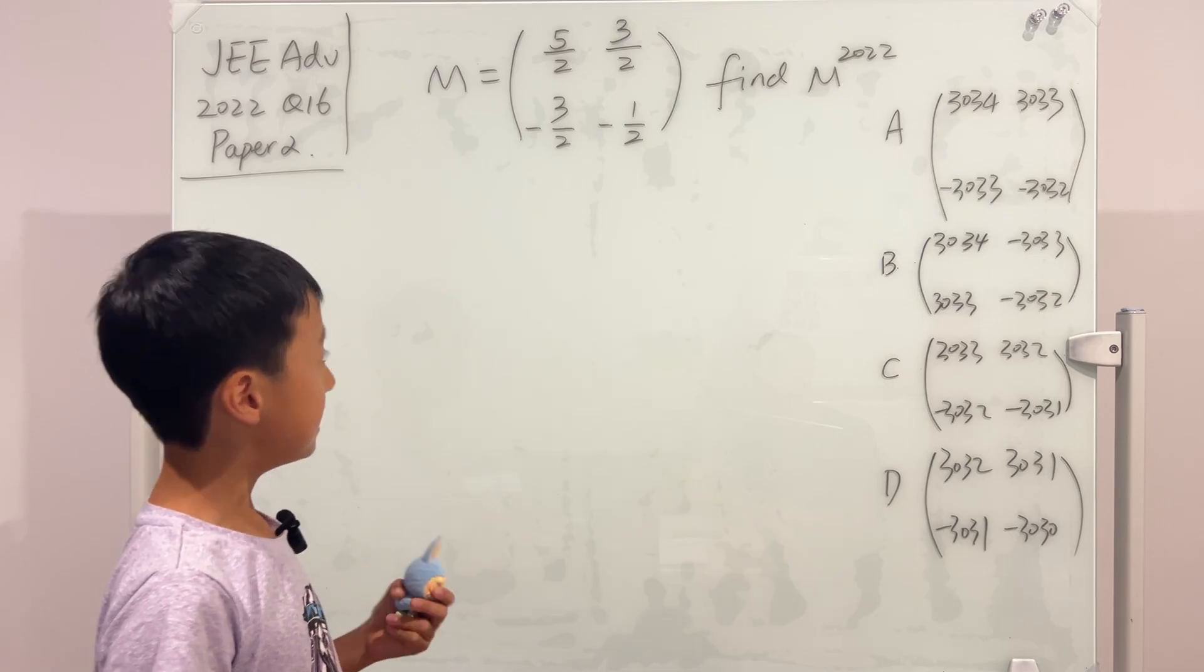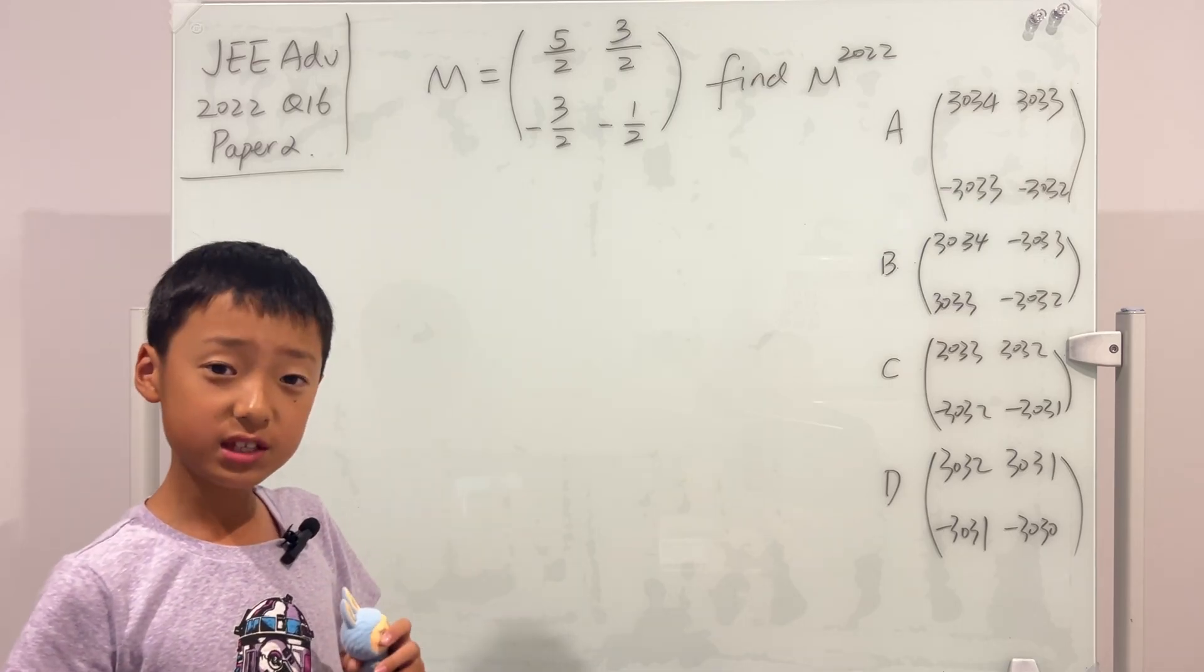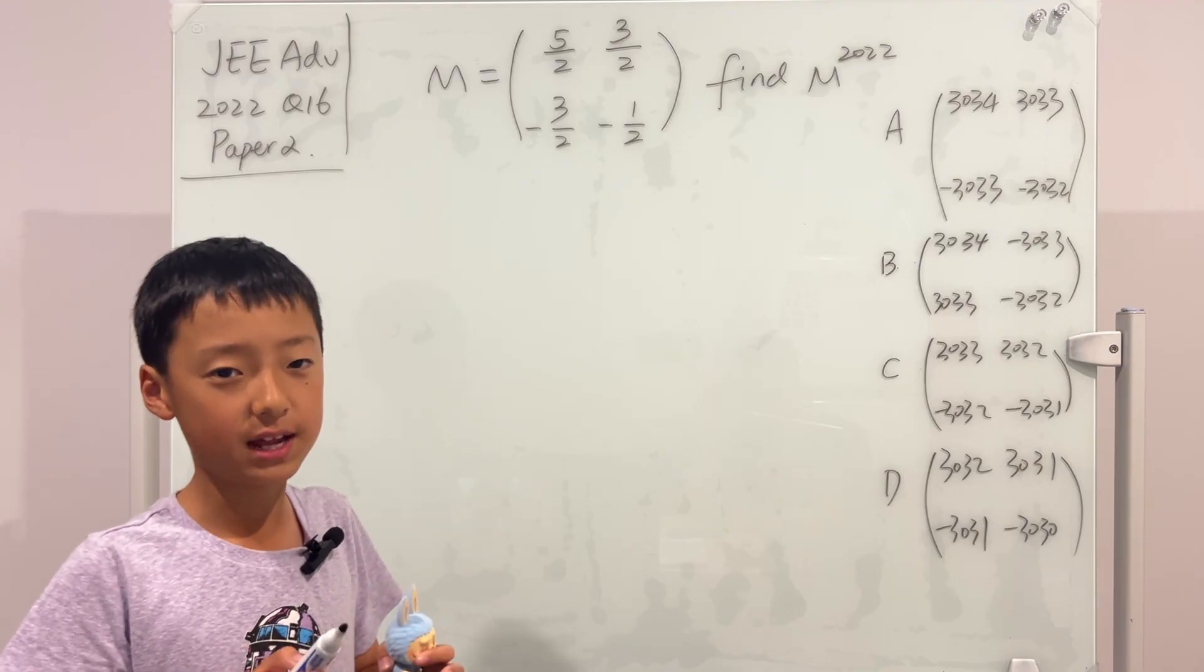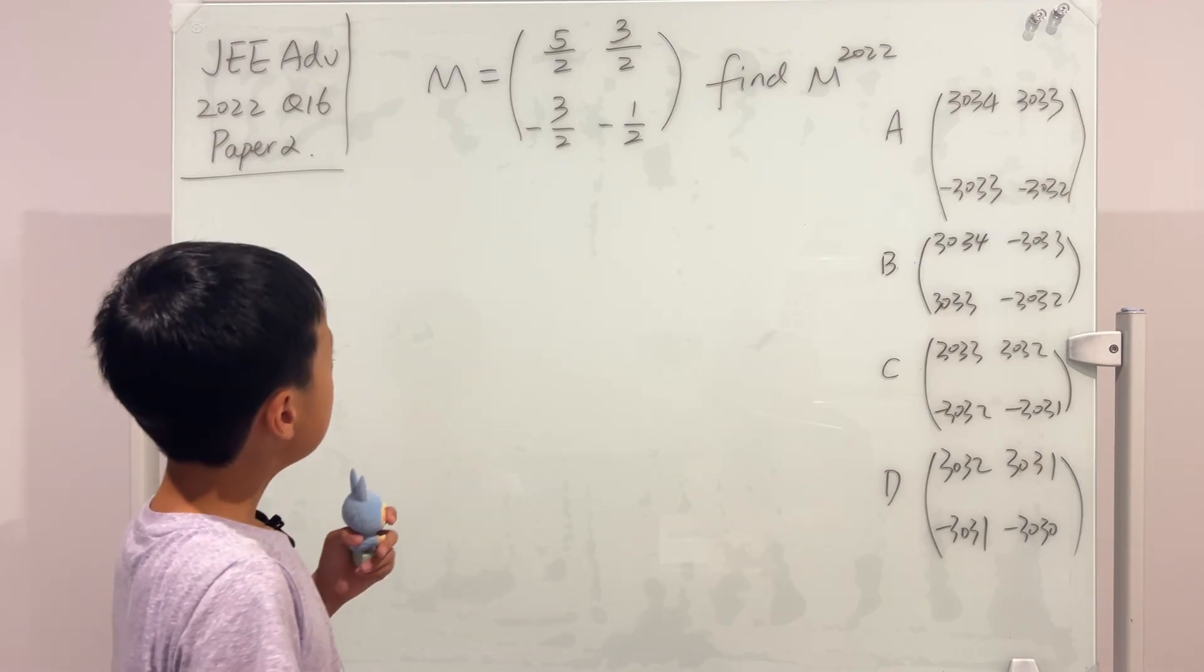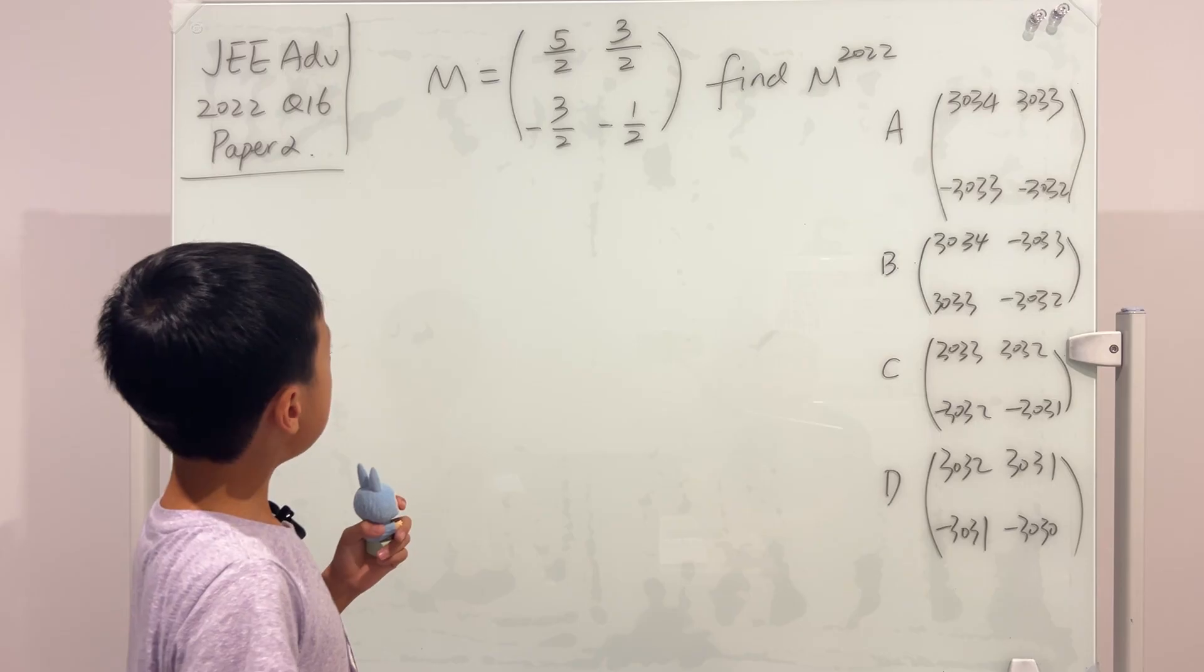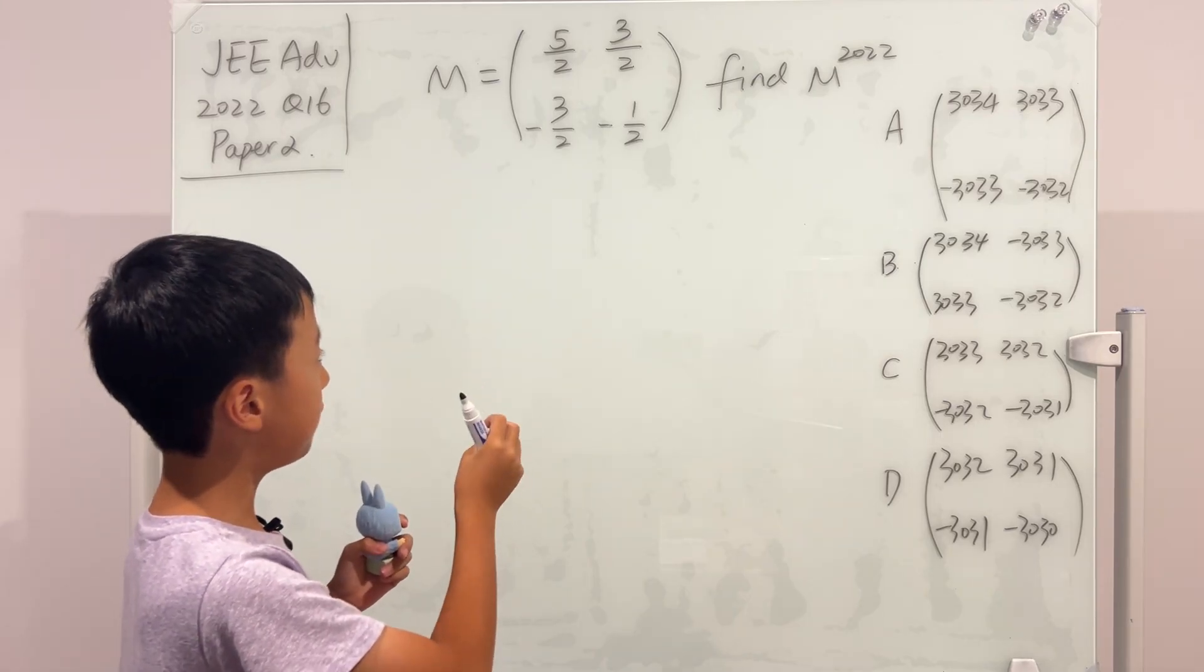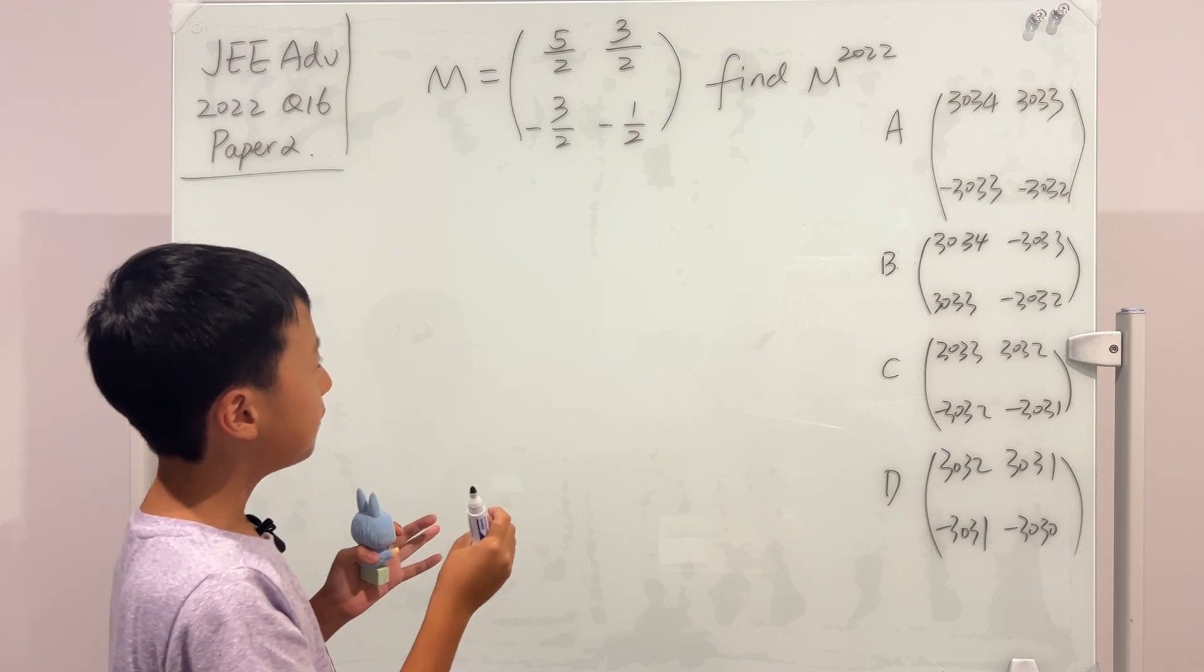So we can see that this is a linear algebra question, and this is my first time teaching linear algebra to you guys, so please don't get mad at me in the comments. Well, we have a matrix M, which is equal to this, and it's telling us to find M to the power of 2022.